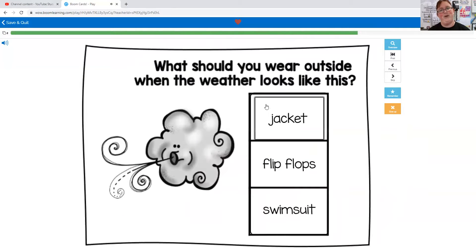All right. What should you wear outside when the weather looks like this? A jacket, flip-flops, or a swimsuit? Well, this is supposed to show that it's windy weather. You probably wouldn't wear your swimsuit because windy kind of makes it cold. Probably wouldn't wear your flip-flops, but you might wear a jacket.